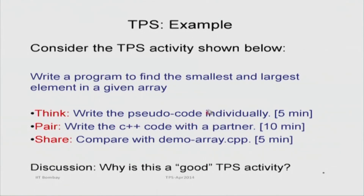In the think phase you write the pseudo code, and now in the pair phase you write the C++ code with a partner. Some center has already pointed out that the timing is also an important thing — the timing is adequate. You are giving them 5 minutes to think about the pseudo code, and then another 10 minutes to write the C++ code. That is a very important point: the timing is kept suitable for the type of question being asked.